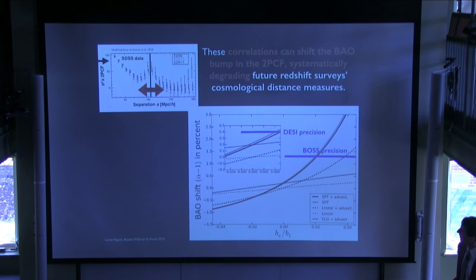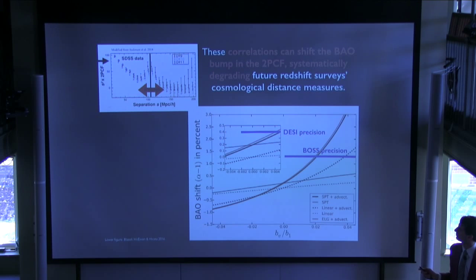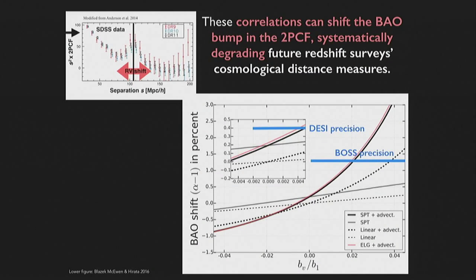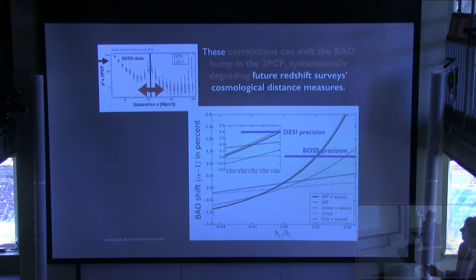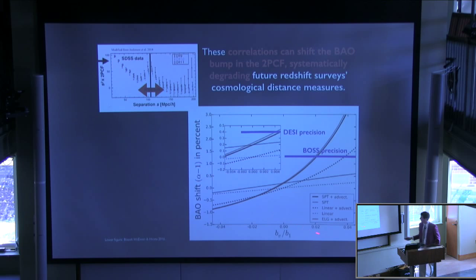The relative velocity shown by this red arrow can actually move where the BAO bump occurs in or out. If you don't correct for that, you'll systematically measure the wrong size of the universe, which could lead to inferring the wrong nature of dark energy. Even a 1-2% coupling between the relative velocity and galaxies today can completely degrade the precision of these surveys using the BAO method. This is shown for both BOSS — a completed sky survey — and DESI, which will have 30 times the number of galaxies as BOSS and is projected to start in 2019.